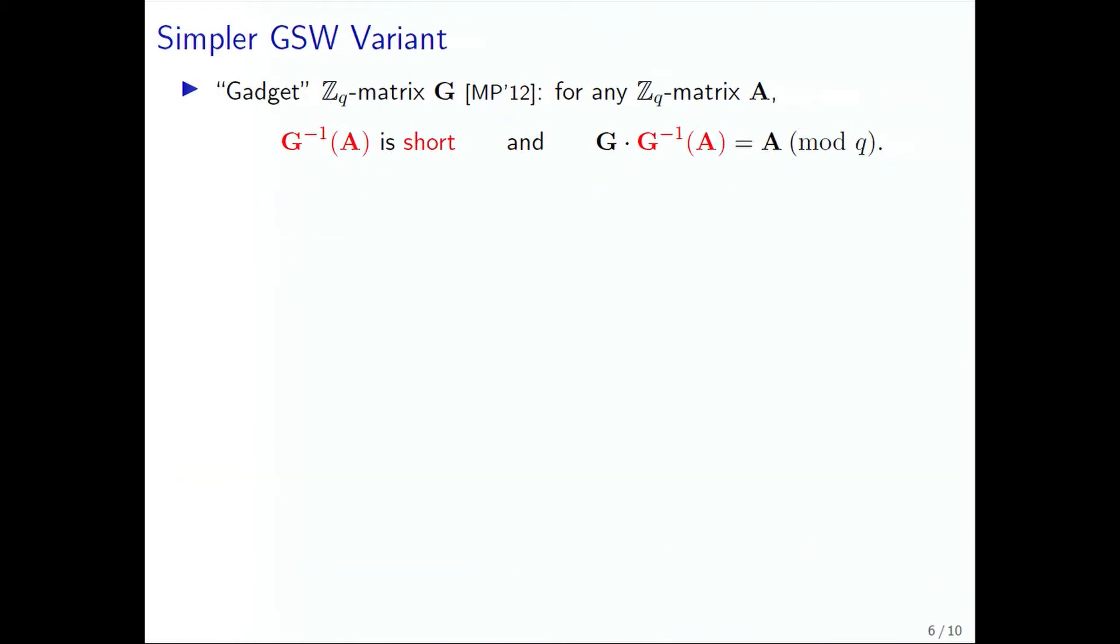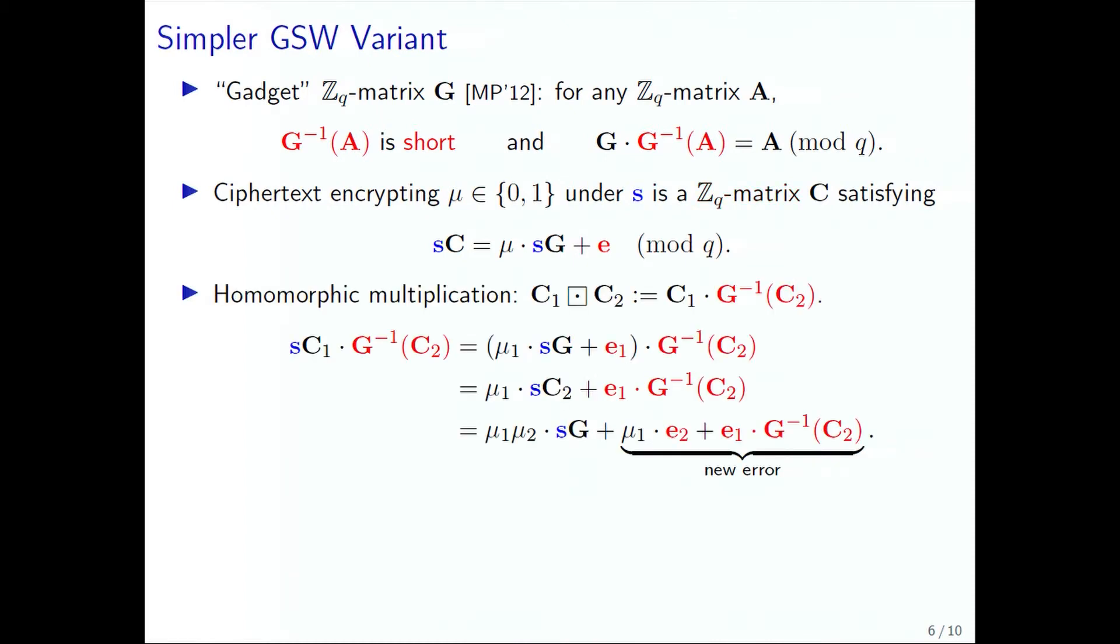I'm going to first go through this simpler variant of the GSW scheme. Our result centers on the gadget matrix G from work of Micciancio and Peikert in 2012. We define a G-inverse of a matrix A, which has the properties that the inverse is short, and G times G-inverse of A is A, which is why we're calling it G-inverse, even though it's sort of an abusive notation, because we're not really inverting the matrix.